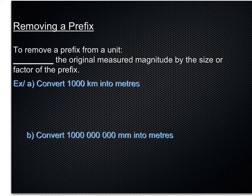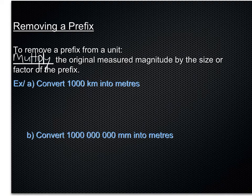Now, working backwards, if you want to remove a prefix from a unit, you need to multiply. Multiply the original measured magnitude by the size or factor of the prefix. For example, convert 1,000 kilometers into meters.